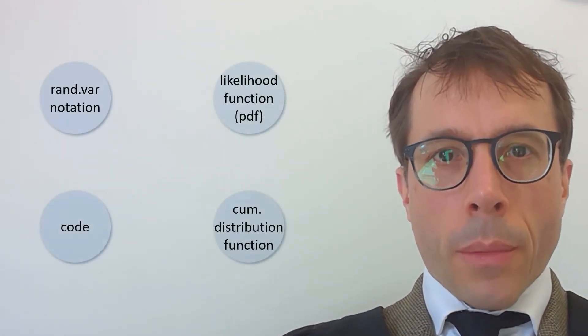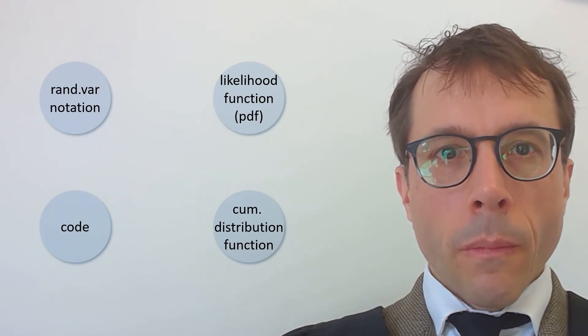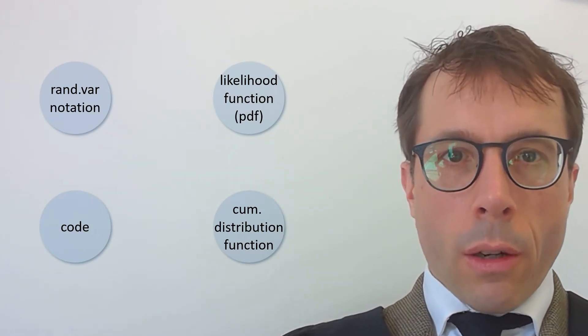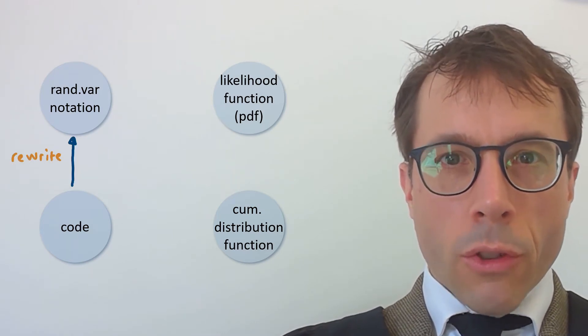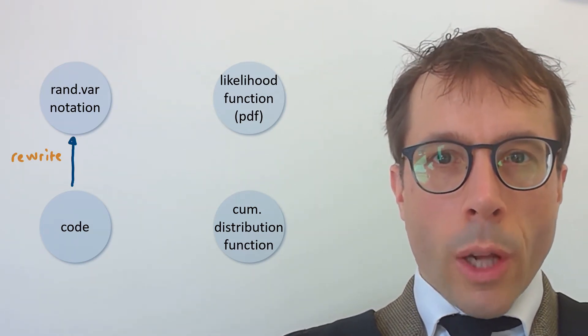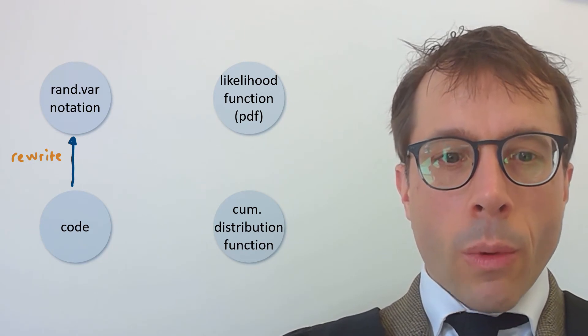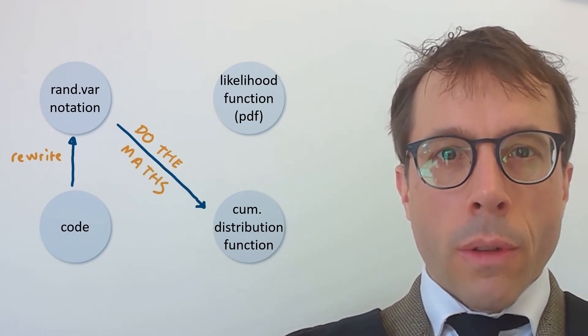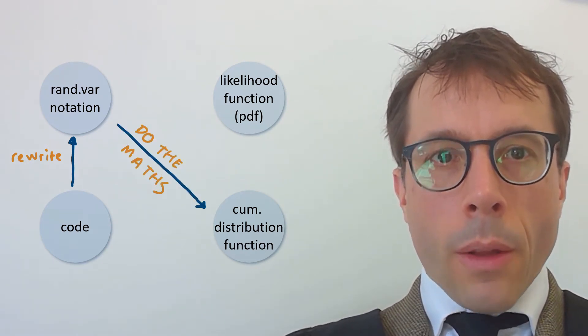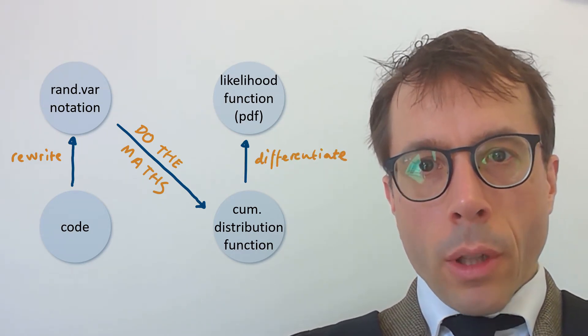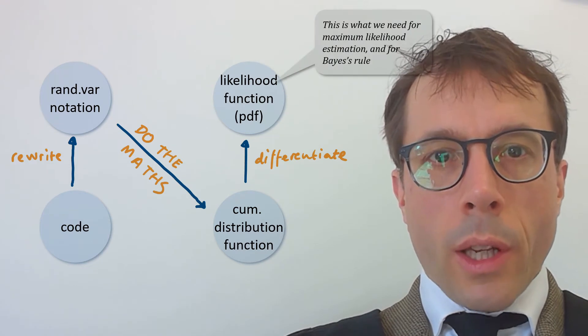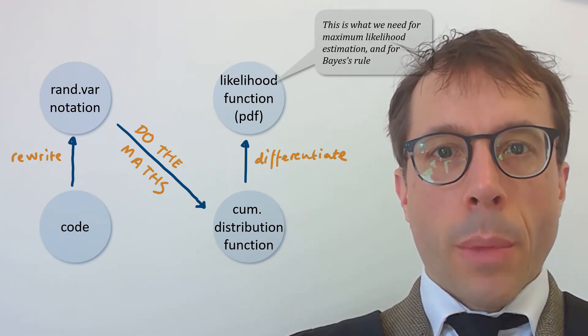Typically, the process is something like this. We might start with code here on the bottom left. Then we rewrite it in random variable notation because that's generally easier to do algebra with. Then, we do some maths to find the cumulative distribution function. Then, differentiate to get the probability density function, i.e. the likelihood function, which is what we need for maximum likelihood estimation or for Bayes' rule.